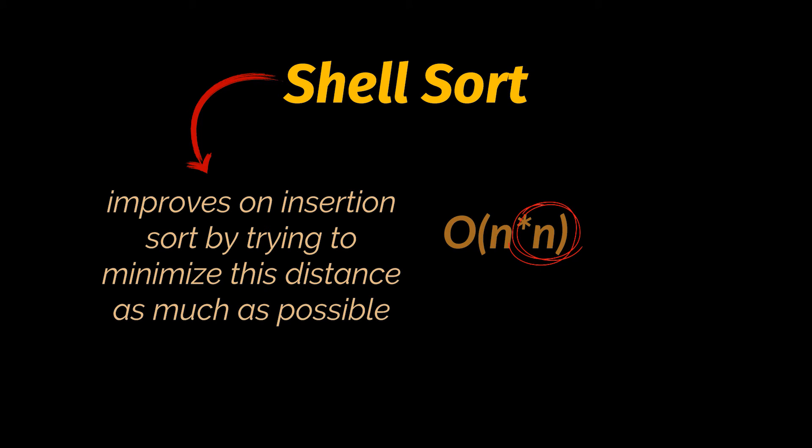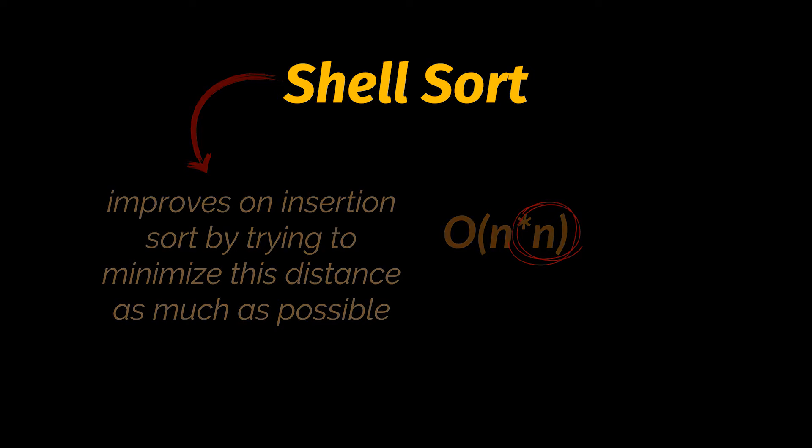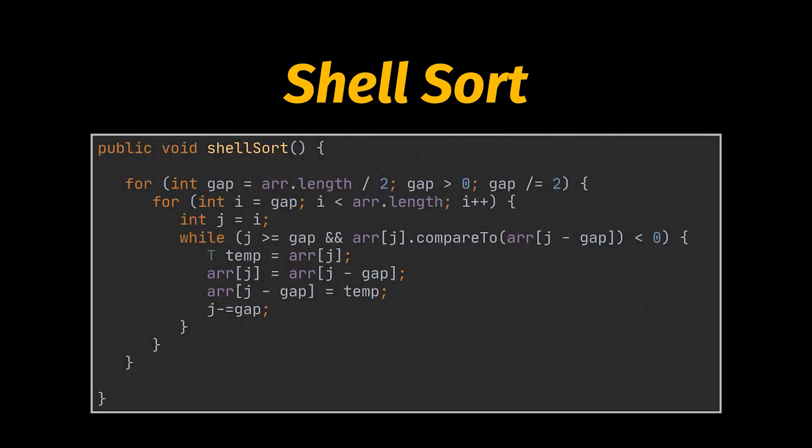Shell sort improves on insertion sort by trying to minimize this distance as much as possible — it sorts elements far apart in the array and progressively shrinks the gap. The Big O of shell sort heavily depends on the preliminary sorting step that is supposed to shrink this gap.